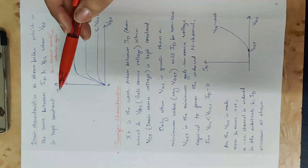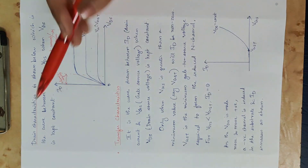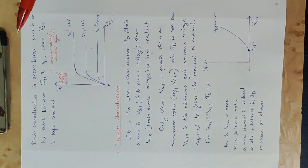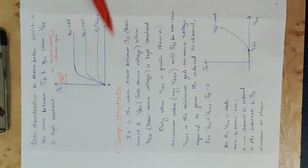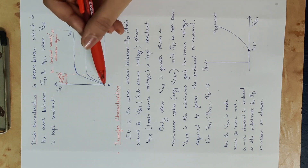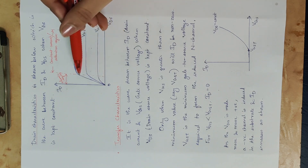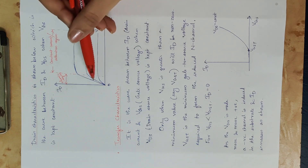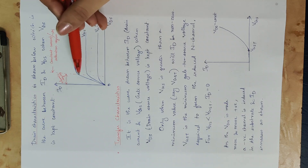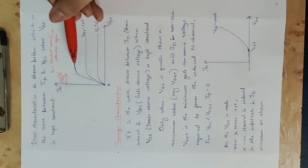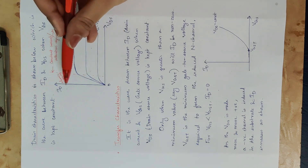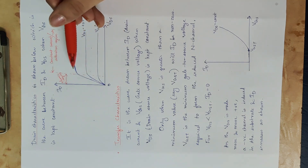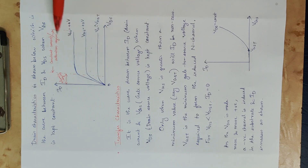We need to learn the drain characteristics. VDS is on the x-axis and drain current ID is on the y-axis. The linear increase in the initial portion is the ohmic region. After that, the current becomes constant — this is called the constant current or saturation region.